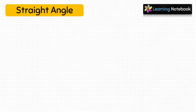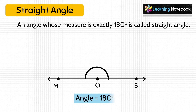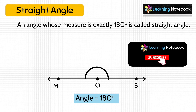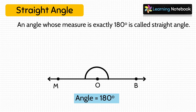Now let's move to the next type of angle — straight angle. An angle whose measure is exactly 180 degrees is called a straight angle. Look at this figure, students — both the arms are pointing in opposite directions making a straight line.